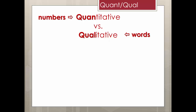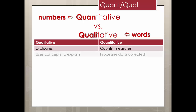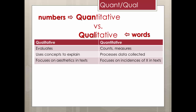Let's break that down a bit further. While qualitative research evaluates, quantitative research counts occurrences, or instances, collecting measurements. Qualitative research uses concepts to explain what is observed and evaluated. Quantitative takes the data, the counts, and collects and processes them. When you focus on the aesthetics in the text of the rhetoric being analyzed, you are engaged in qualitative research.